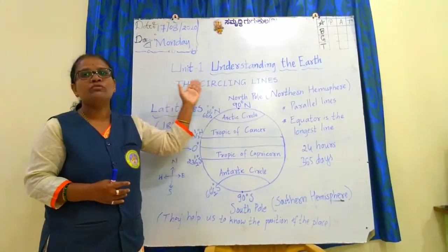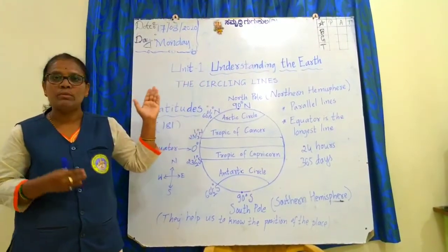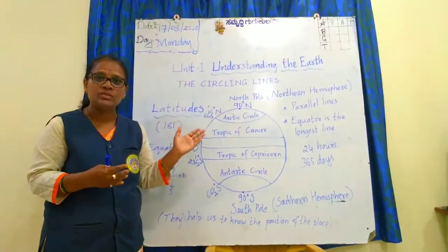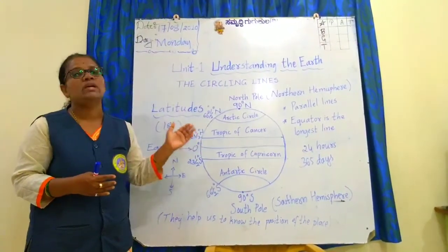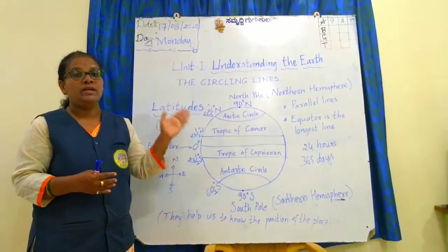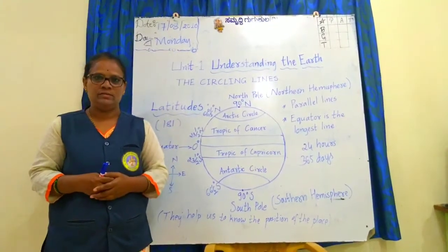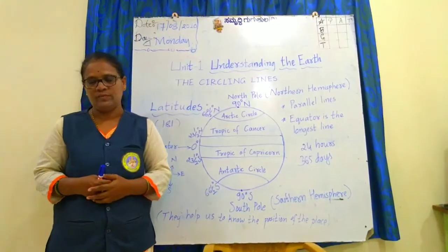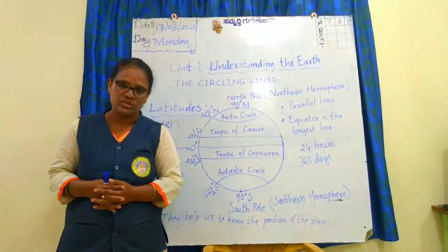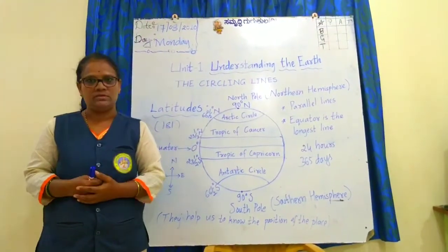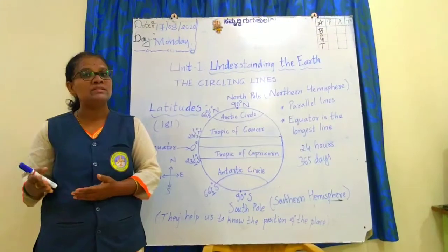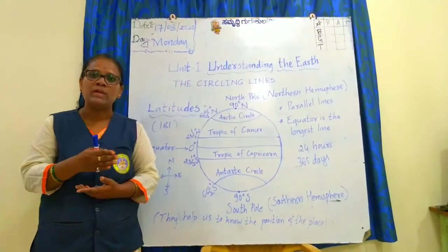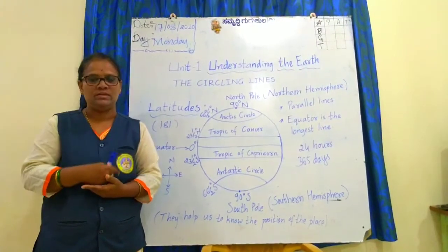We will start with the first subunit — the circling lines. In that, I will first give you a brief introduction of earth, then we will learn about latitudes, longitudes, and international date. Earth is the third planet from the sun.